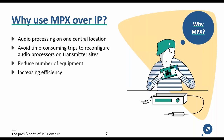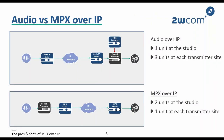Why should we use MPX over IP? Aside from the technical aspects, let's look at the operational side. It allows broadcasters to do audio processing at a central location, avoiding time-consuming trips to reconfigure audio processors at each transmitter site, and reduces the number of equipment required. The most common transport method is audio over IP, which is effective and, due to low bandwidth usage, a cost-effective way of feeding audio to transmitters.